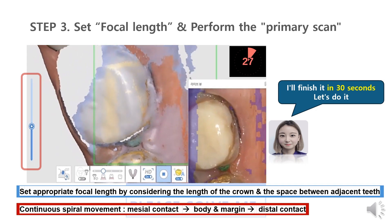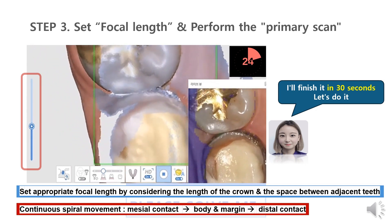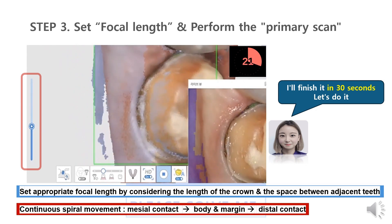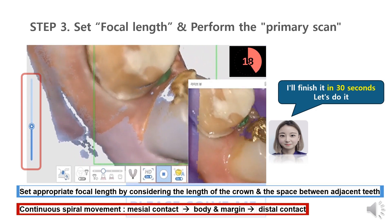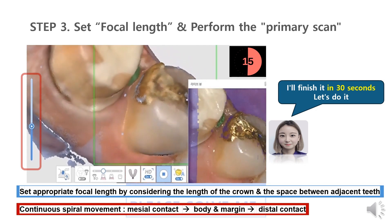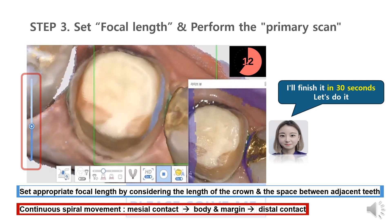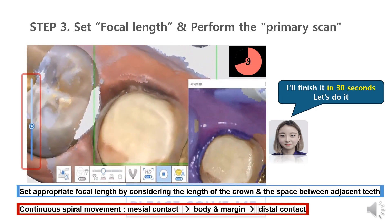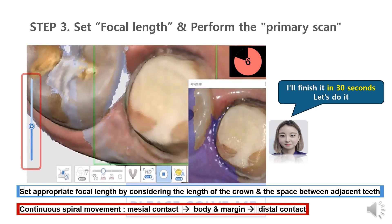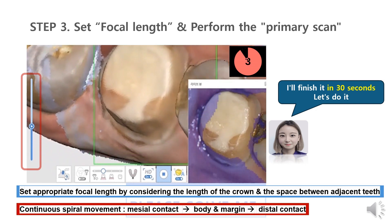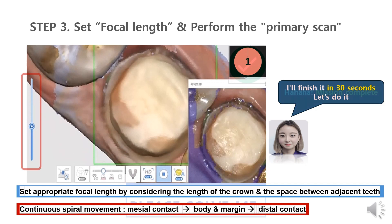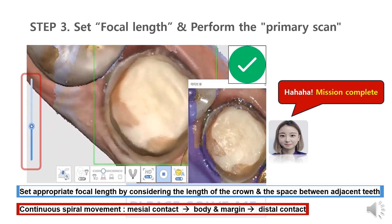Step 3: Set the appropriate focal length and perform the primary scan in a continuous movement as uninterrupted as possible. We have to set the appropriate focal length by considering the length of the crown and the space between adjacent teeth. Then proceed with the scan in the order of distal contact, body and margin, then mesial contact, in the same way as in the previous diagram. The primary scan is performed with the mindset of obtaining approximate data of the entire crown through a spiral movement. While the body can be roughly scanned, we need accurate data for both the distal and mesial contact points in the primary scan.